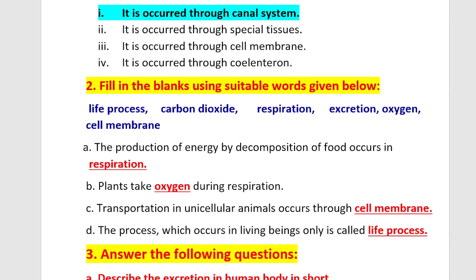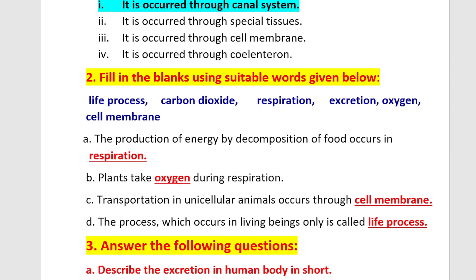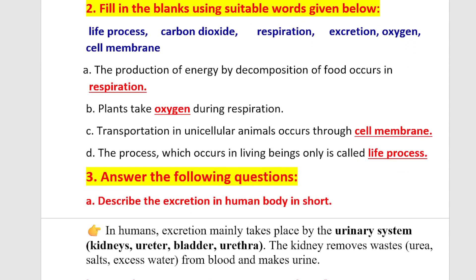Question A: The production of energy by decomposition of food occurs in respiration. Question B: Plants take oxygen during respiration. During photosynthesis, plants take in carbon dioxide gas. Question C: Transportation in unicellular animals occurs through the cell membrane. Question D: The process which occurs in living beings only is called life process.